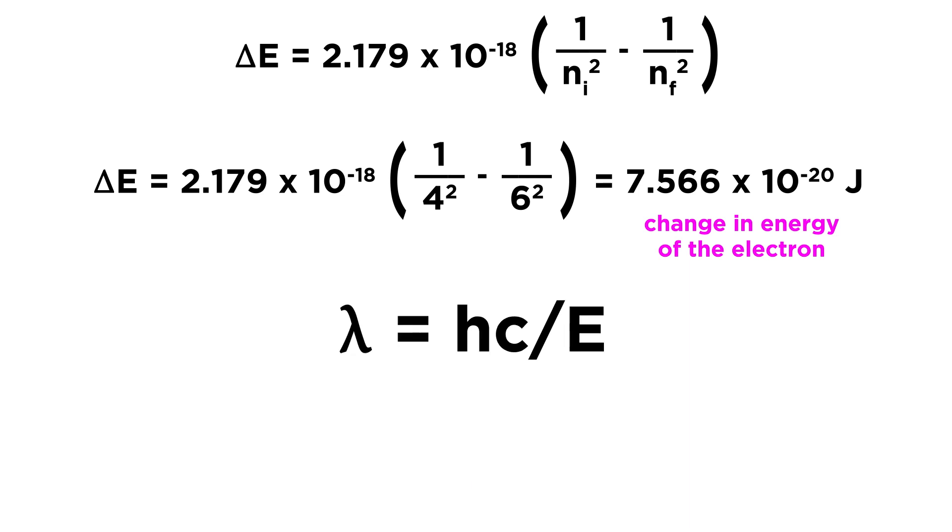Let's start plugging things in. The wavelength equals Planck's constant (6.626 × 10^-34 J·s) times the speed of light (3.00 × 10^8 m/s),